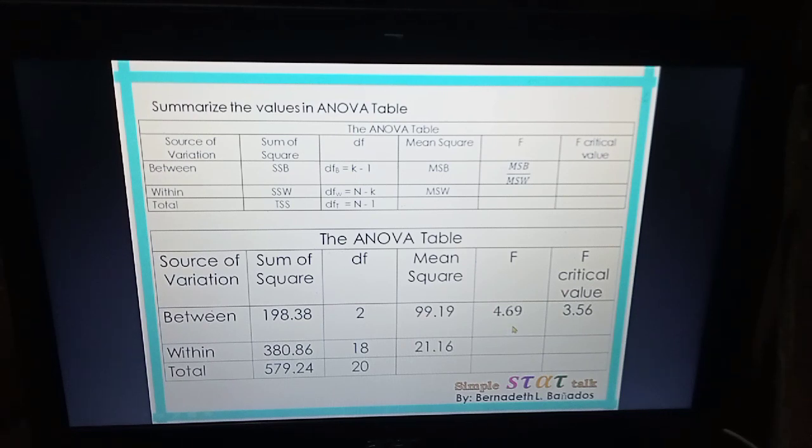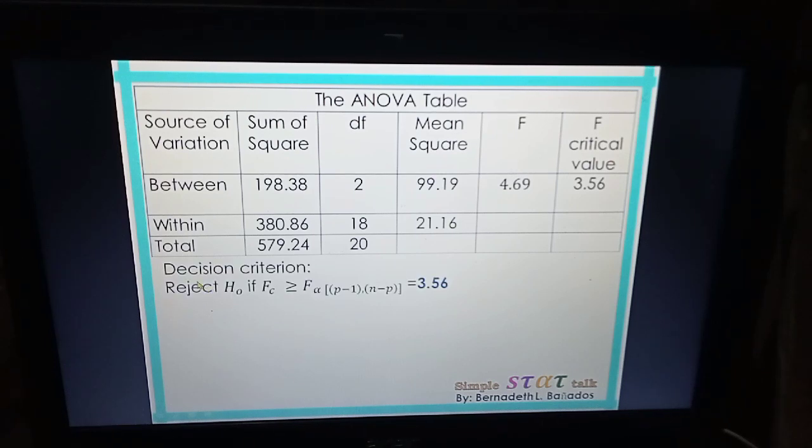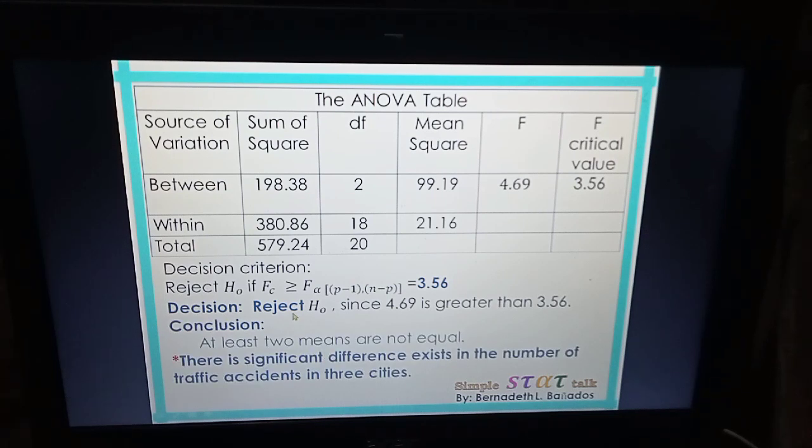We can now make our decision using this decision criterion. Compare F computed to the critical value. What should be our decision? Since 4.69 is greater than 3.56, we are going to reject H0. There is evidence to conclude that at least two means are not equal. Or simply, we can state that there is significant difference in the number of traffic accidents in the three cities. Some cities have higher or lower traffic accidents compared to the other cities.